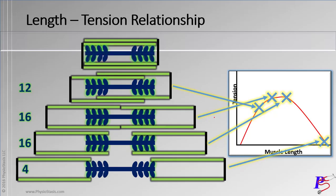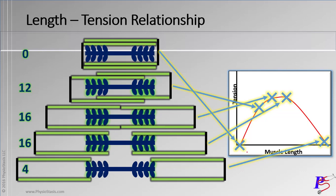Now let's close the sarcomere all the way. These heads want to pull in one direction on this actin strand — so four work. However, the other heads want to pull that direction, but the strand wants to go the other way, so they're blocked. On the other side, the same blocking occurs. And when the sarcomere is closed all the way, there's no more room for it to get smaller — so the effective number is actually zero. At its shortest length, we have the smallest tension or force.